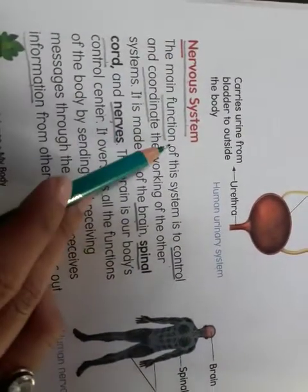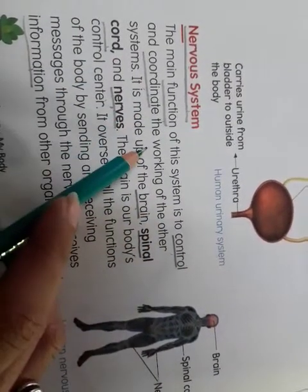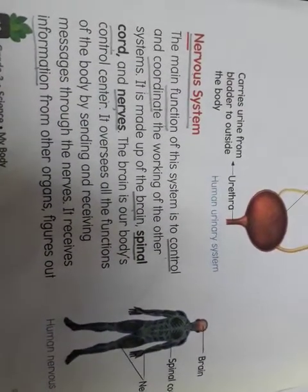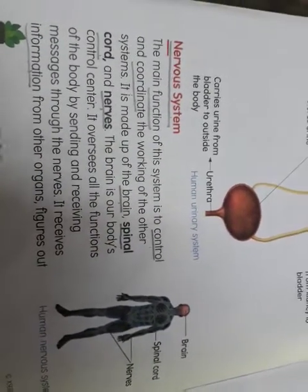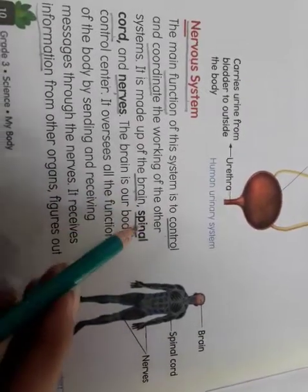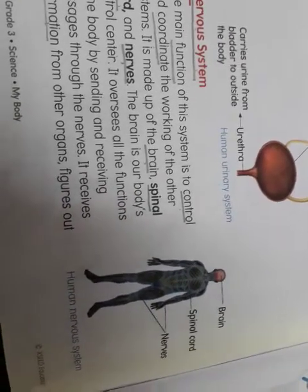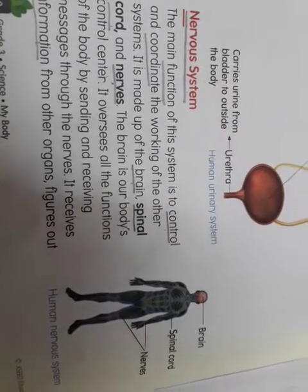Next lesson is the nervous system. The main function of this system is to control and coordinate the working of all other systems. The nervous system is made up of the brain, spinal cord, and nerves. The brain is our body's control center.